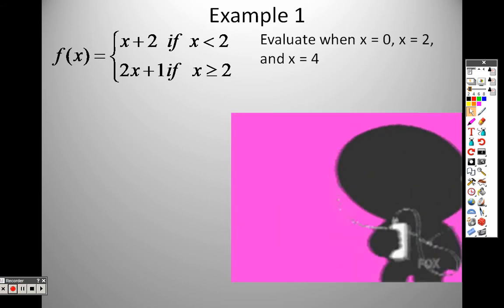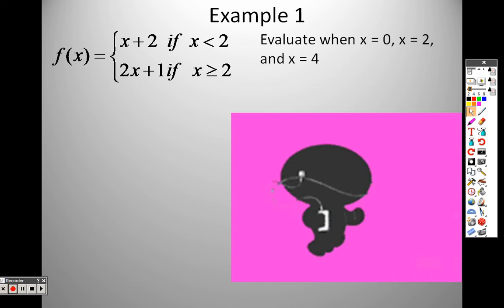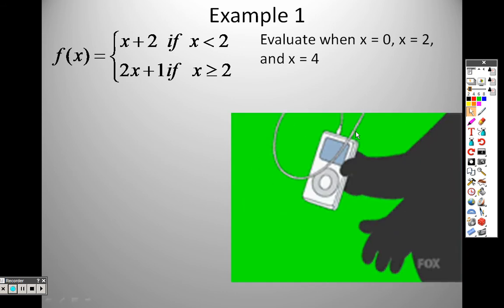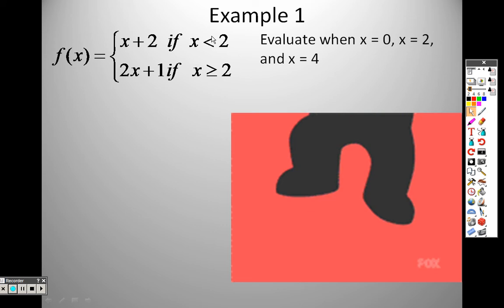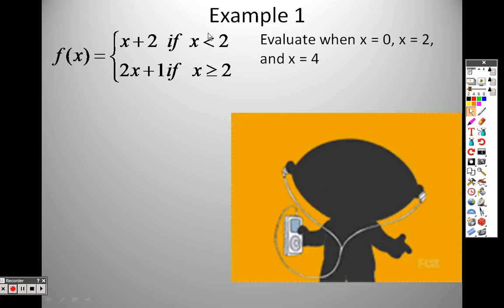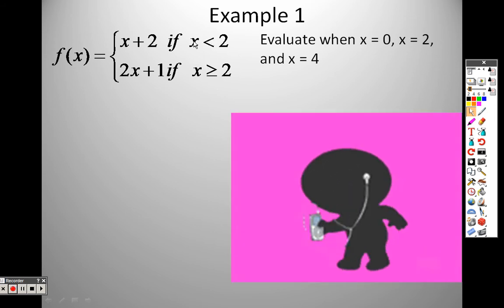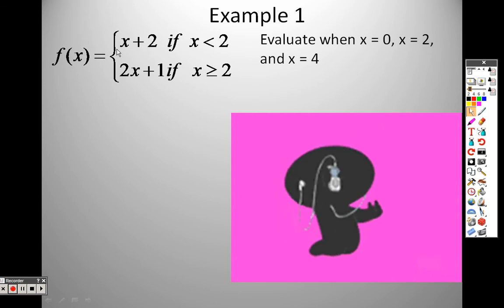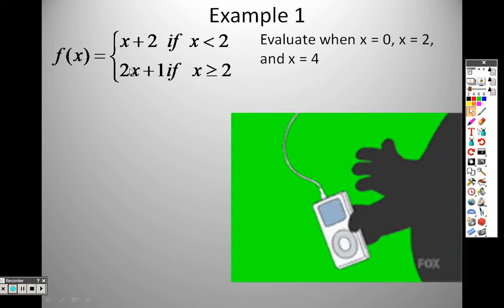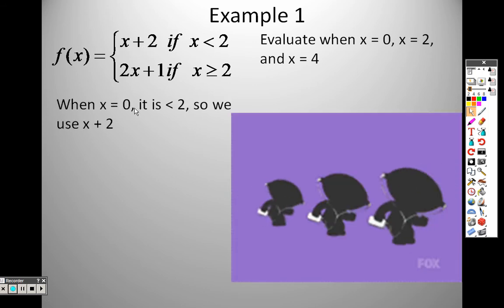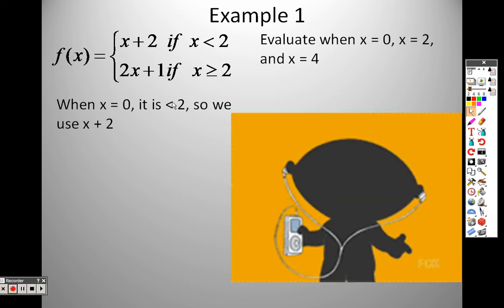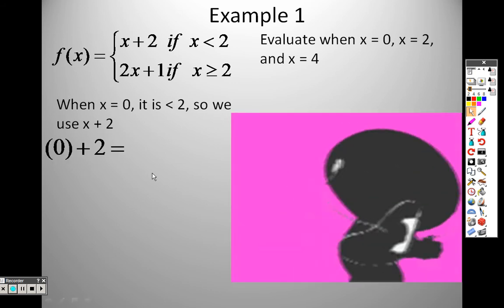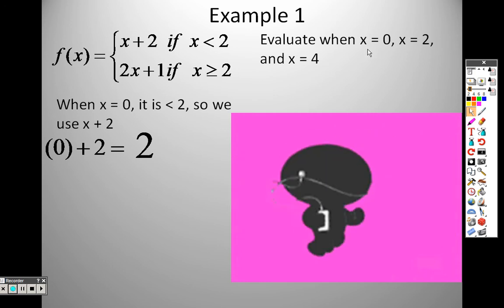Evaluate this when x equals zero, then when x equals two, and when x equals four. When x equals zero, which piece does it follow? Zero is less than two, so we use the top function and plug zero in — not the bottom one. Since zero is less than two, we use x plus two: zero plus two equals two. So that's your answer to the first one.